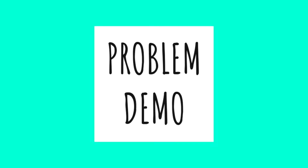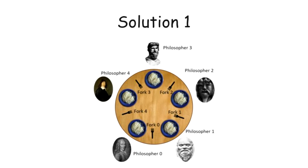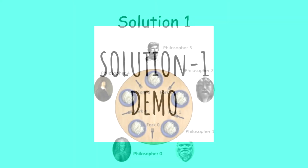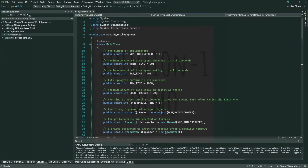Now, let's see how we can solve this problem. In the first solution, to get rid of the deadlock, we will force the philosophers to give up the first fork if they can't get the second one in a certain amount of time. After failing to take the resources, they will spend time thinking for a random amount of time without trying to get the forks again. Hopefully, using this approach and with the help of randomness, we will get rid of the deadlock.